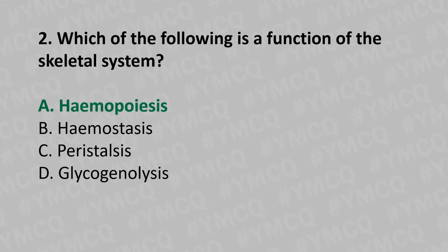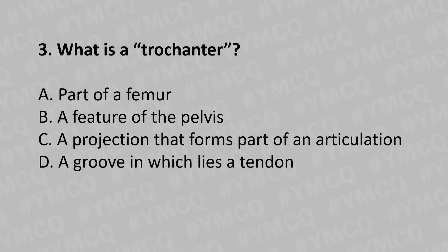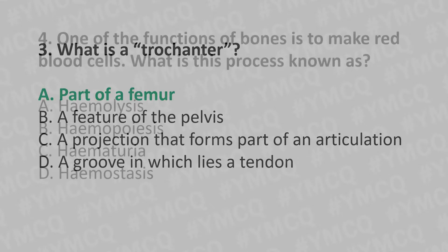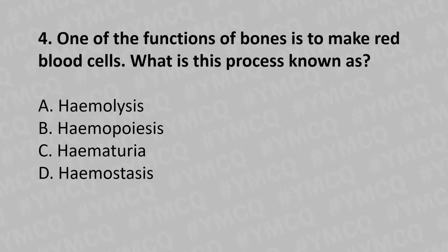Moving to our third question: What is a trochanter? Option A: part of a femur, Option B: a feature of the pelvis, Option C: a projection that forms part of an articulation, Option D: a groove in which lies a tendon. The answer is Option A: part of a femur.